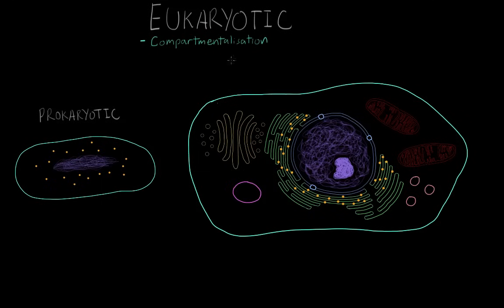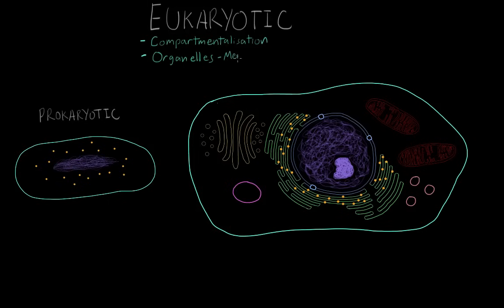The name for these compartments in the eukaryotic cell is organelles. Just like your body has different organs that have different functions — your heart pumps blood, your lungs take in oxygen — different organelles in the cell have different functions. These organelles are separated from other parts of the cell by membranes. And the name eukaryotic comes from one of these organelles.